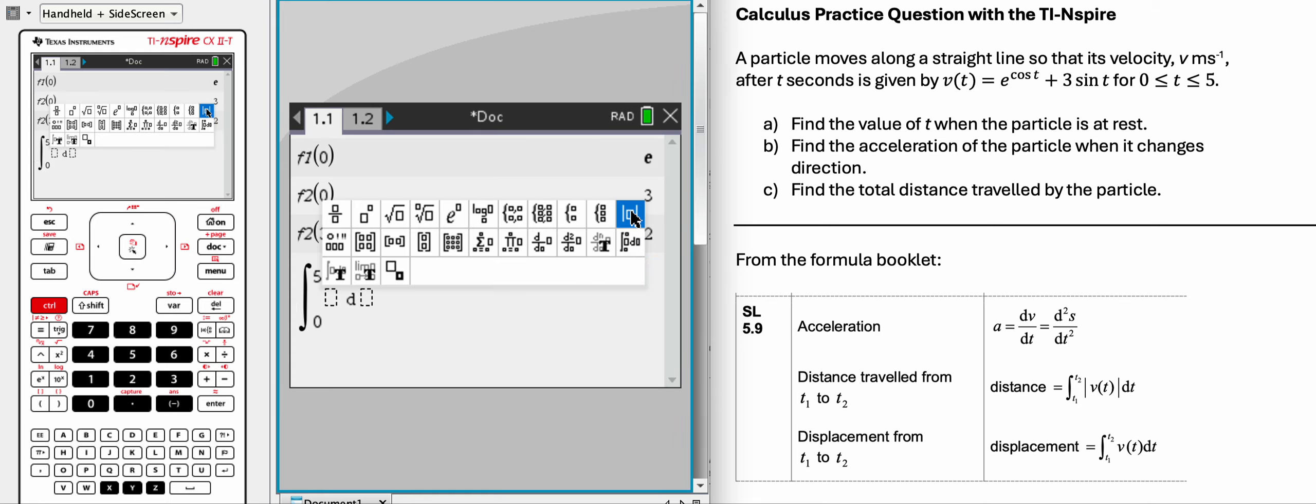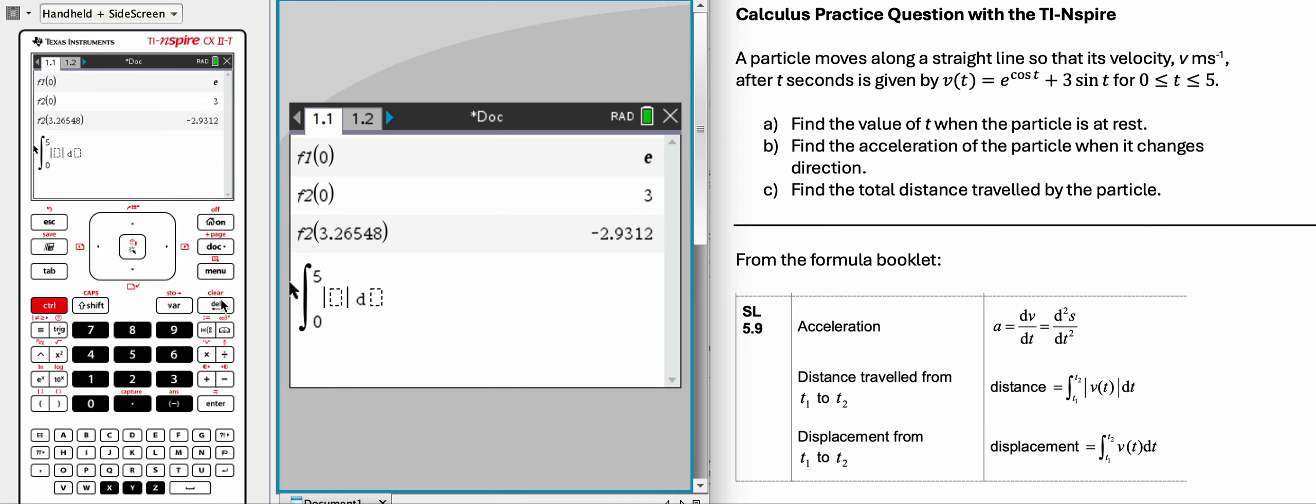And we will do the original function, which is f1 of x dx, and it is 12.7.